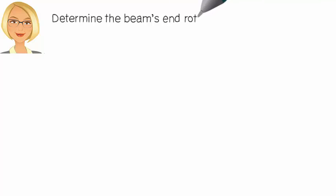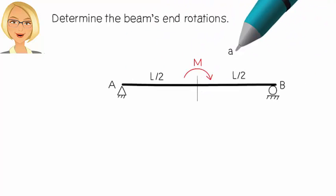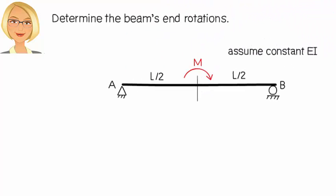We have a simply supported beam subjected to a clockwise concentrated moment at mid-span. We wish to determine the beam's end rotations using the virtual work method. The beam has a constant EI. Since the end rotations are unknown, I'm going to assume their direction.